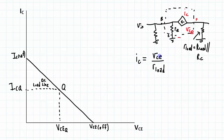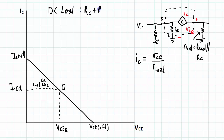and this value of VCE represents the change of VCE across the AC load line also. The reason that the AC load line and the DC load line are different is because for the DC load line what you're concerned with is RC and RE, whereas for the AC load line